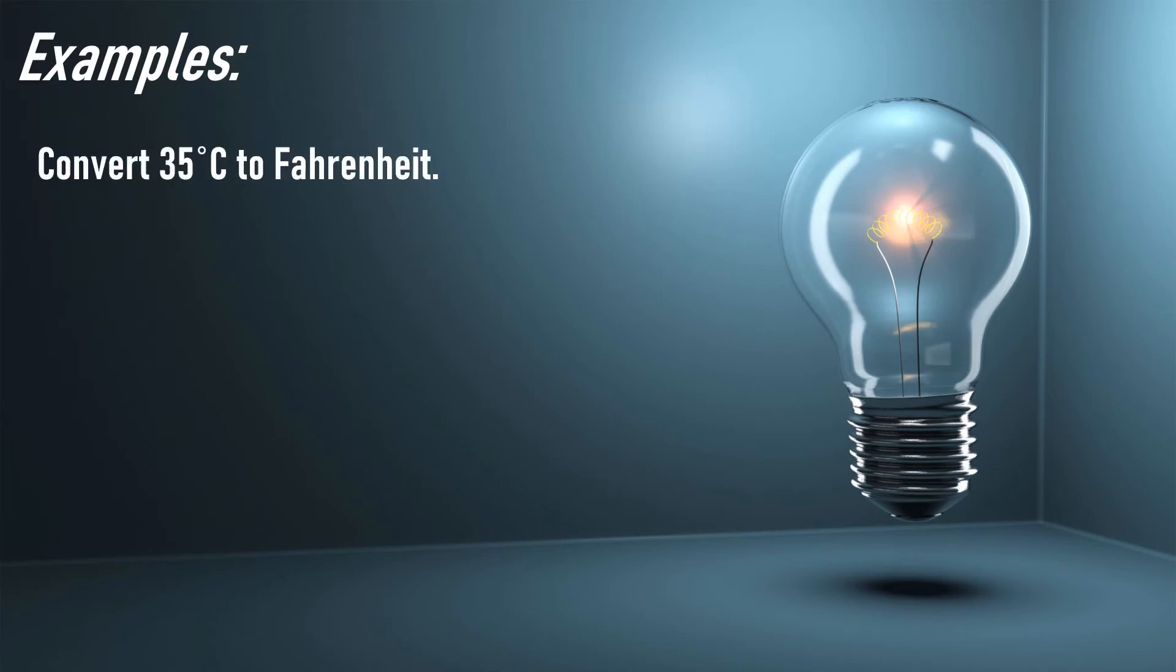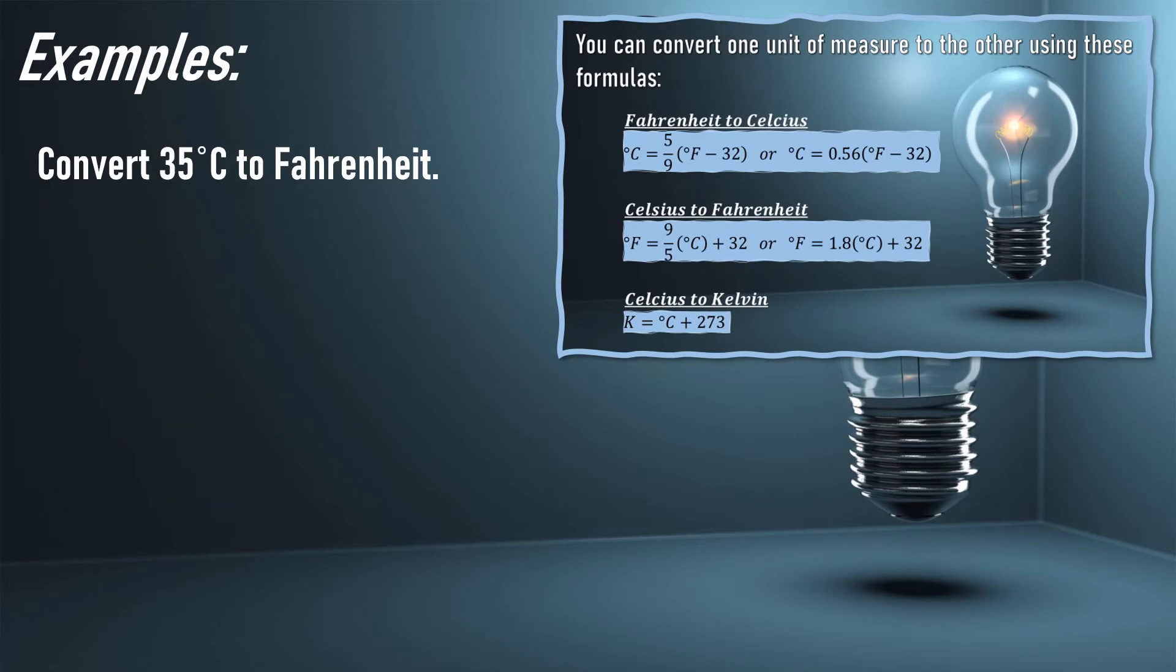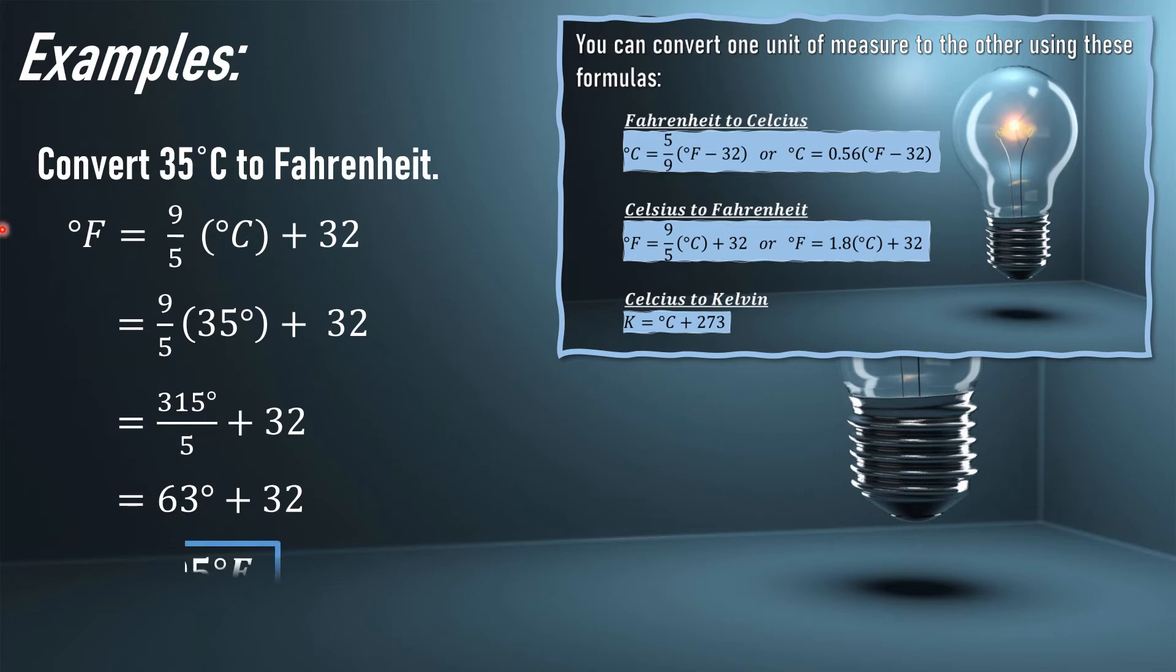Let's now have an example. Convert 35 degrees Celsius to Fahrenheit. To convert 35 degrees Celsius to Fahrenheit, we will use the Celsius to Fahrenheit formula. We'll use the second formula with the fixed value 9 over 5. Let us substitute the given 35 degrees Celsius. This becomes 9/5 × 35° + 32. Multiply the numerator 9 by 35, which gives 315° over 5 plus 32. Divide 315 by 5 to get 63° + 32. Therefore, the value of 35 degrees Celsius in Fahrenheit is 95 degrees.